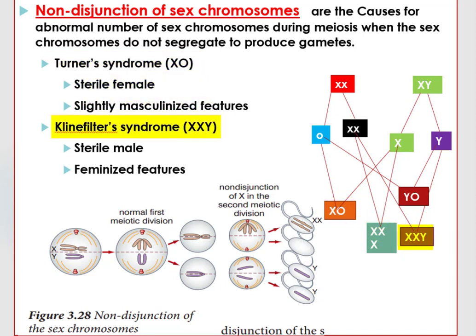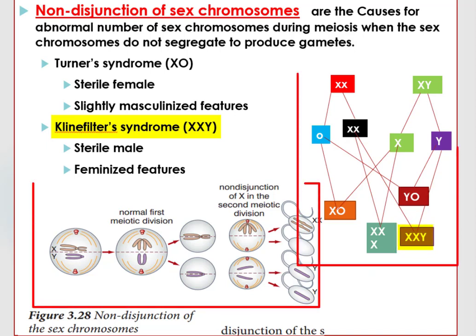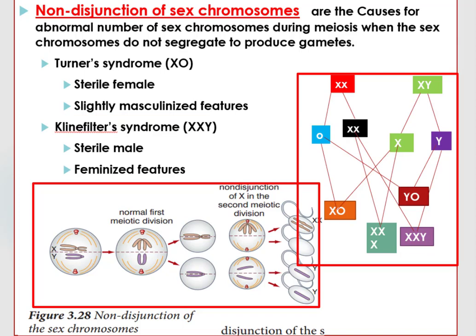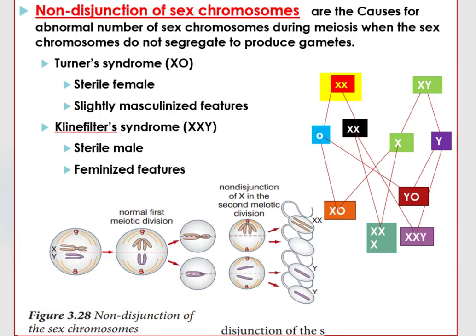Similarly, individuals with two X chromosomes and one Y chromosome — that is, XXY — what we call Klinefelter syndrome, develop into sterile males and show feminized features. For example, if female sex chromosomes XX do not segregate properly during meiosis due to failure of spindle fibers to pull apart, the gametes could contain both XX chromosomes, while other gametes contain no sex chromosome at all.